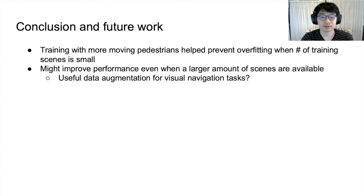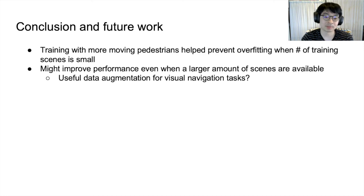To conclude, we found that increasing the number of moving pedestrians during training helped to combat overfitting to the small amount of training scenes that we had available. In the future, it may be interesting to see if this method of data augmentation could help improve navigation performance even when a larger amount of training scenes may be available. Thank you.